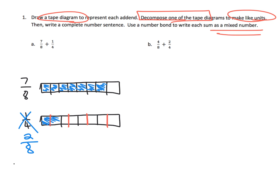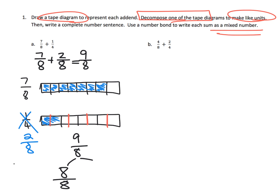Our new number sentence becomes seven eighths plus two eighths, which is equal to nine eighths. Now we need to use a number bond. Nine eighths is eight eighths plus one eighth, and eight eighths is equal to one whole, plus that extra one eighth left over. So nine eighths is equal to one and one eighth. Parents and teachers, I'm going to leave problem B up to you.